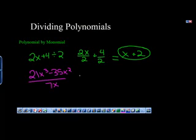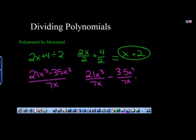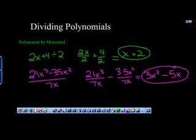Here is another example of dividing a polynomial by a monomial. Again, take each term and divide it by the monomial. 21 divided by 7 is 3, x to the third divided by x is x squared, minus 35 divided by 7 is 5, x squared divided by x is x, and here's our answer.